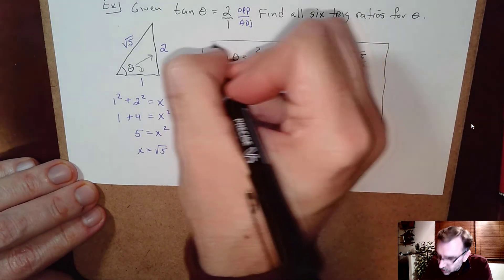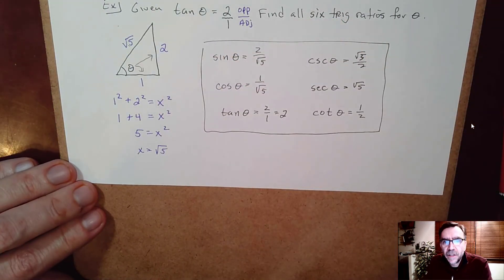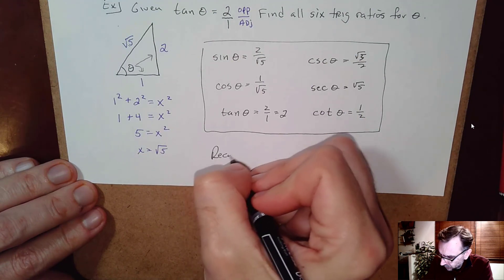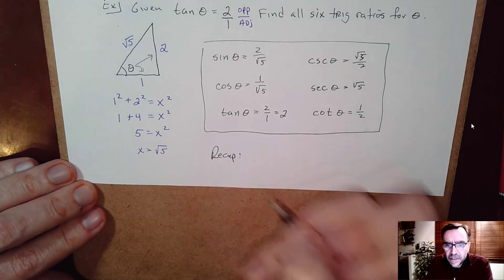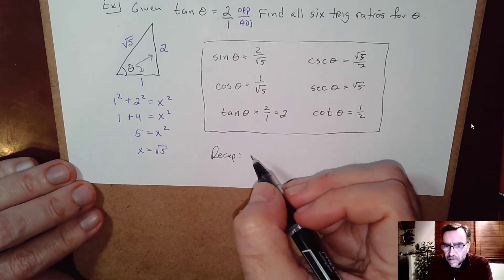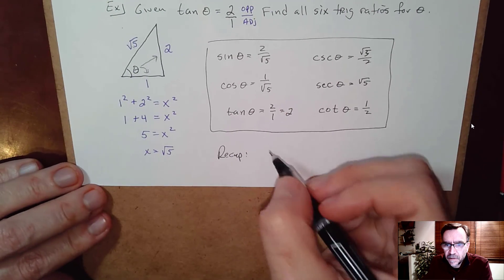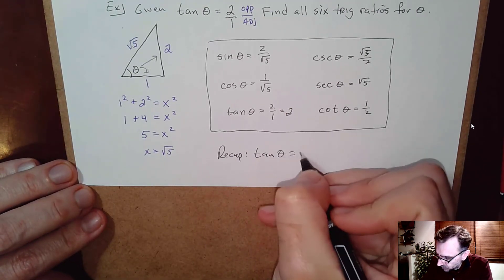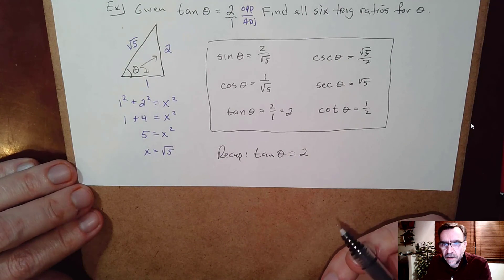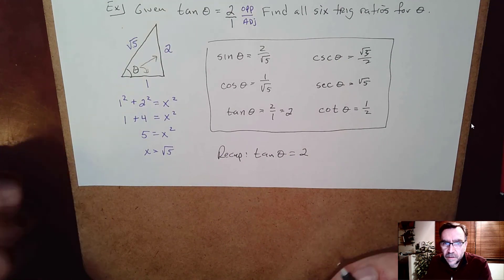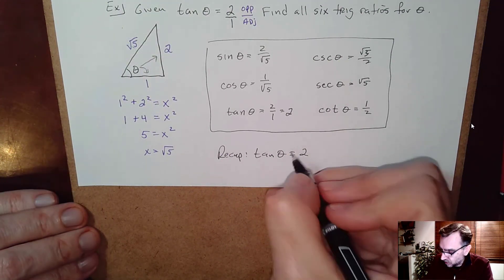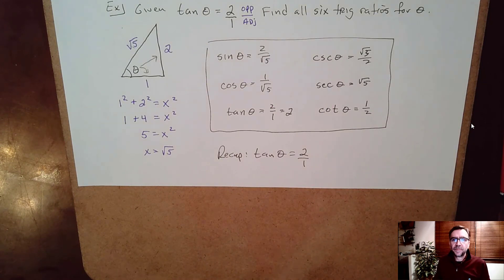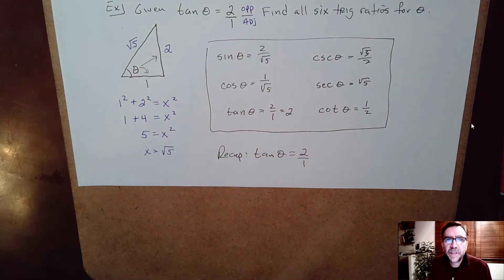Moral of the story: if they don't give you a fraction — like tangent of theta equals 2 — remember that trig ratios are fractions, so you can always make it into a fraction by putting it over 1. See you in the next video.